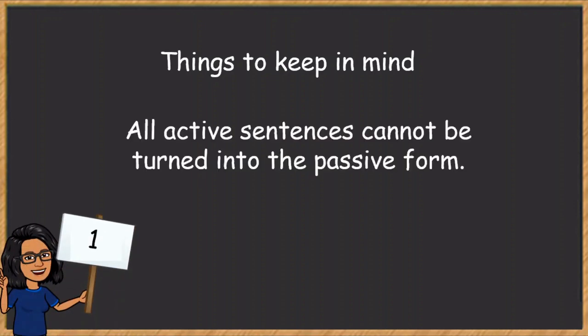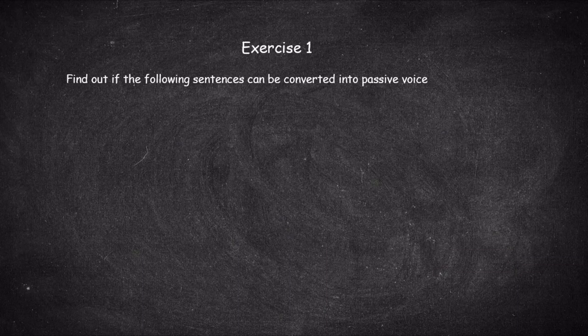The first thing to keep in mind is that all active sentences cannot be turned into the passive form. There are certain verbs which are intransitive. Intransitive verbs do not take an object, and sentences with intransitive verbs cannot be turned into a passive form. Let's look at some examples — see if you can identify which sentences cannot be converted into the passive form.